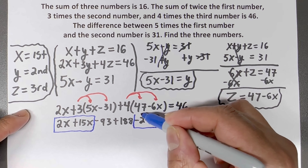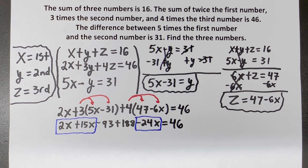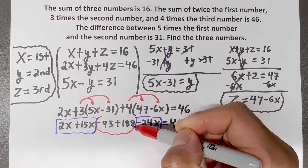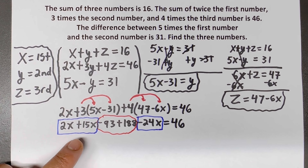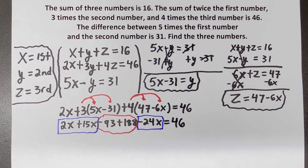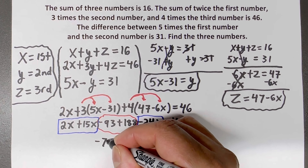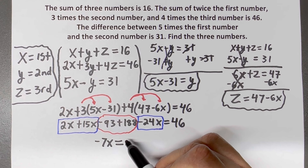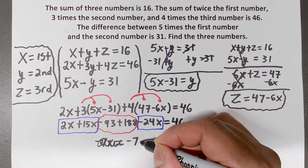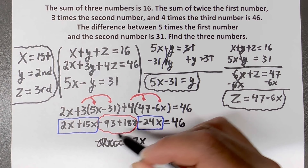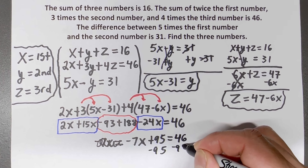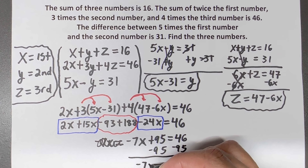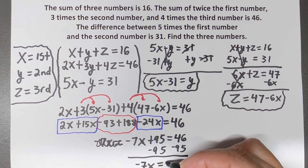Combining the x terms: 2x plus 15x minus 24x gives me negative 7x. Combining the constants: negative 93 plus 188 gives me 95. So negative 7x plus 95 equals 46. I subtract 95 from both sides, giving me negative 7x equals negative 49.